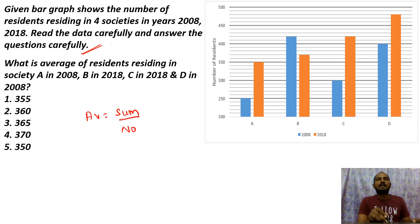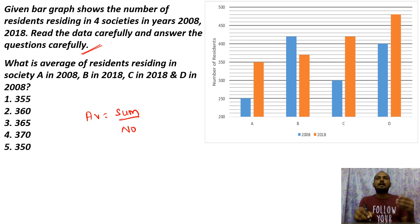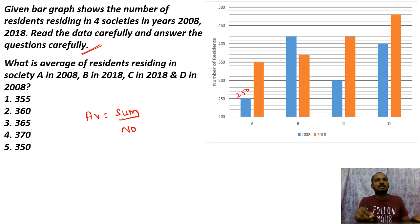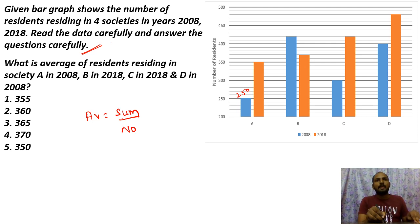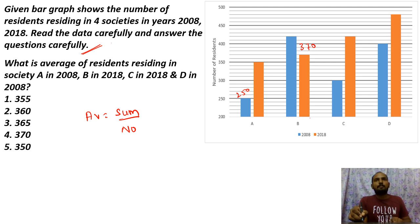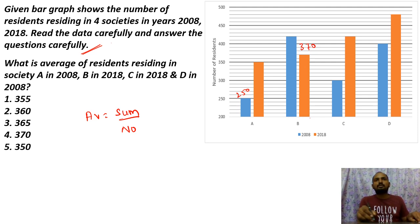For four values, add them and divide. A in 2008 is 250. B in 2018 is 370. Start adding: 250 plus 370 is 620. Then 620 plus 420 — wait, C in 2018 is 300, so 620 plus 420 gives 1040. Running total so far is 1040.